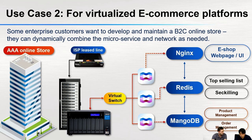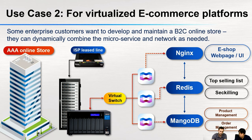They also launch another container package like MongoDB. You can save important data like product information, links to product photos, and categories. They can also manage orders and stock. This is very important for product management and project management, as MongoDB has dynamic schemas that can incorporate any type of data. So they can dynamically combine those microservices with the network via the virtual switch.